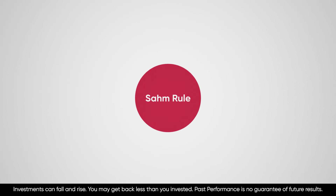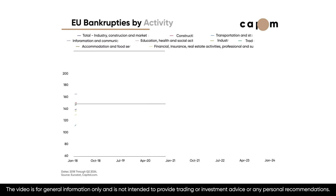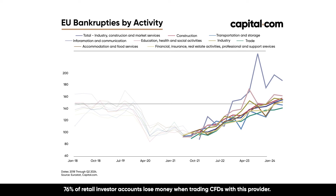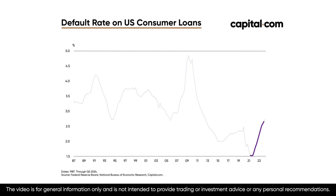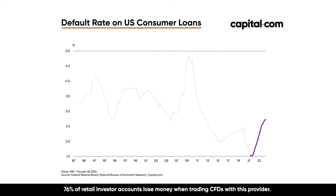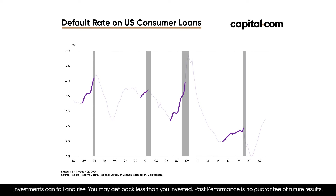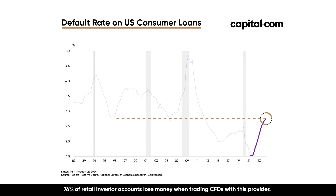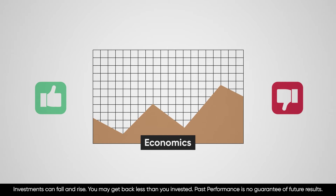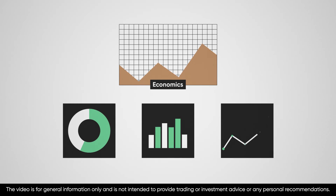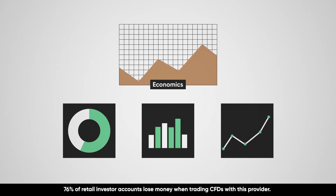That being said, we do have some signs that the rule could eventually prove to be a successful signal. In Europe, the number of bankruptcy declarations has been steadily rising across pretty much every sector of the economy, climbing to the highest level in over six years. In the United States, the number of delinquencies on consumer loans is currently rising at a rapid pace, meaning people are failing to pay back their loans and struggling to get by in today's economic environment. The counter-argument is that delinquencies, while rising, are still at the lower end of the range seen over the last 30 years. Economics is not an exact science — as a trader, you need to identify which pieces of information you think will be the most important determining factors for the future of the economy.